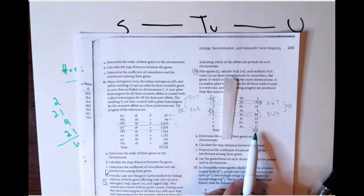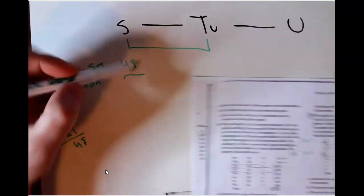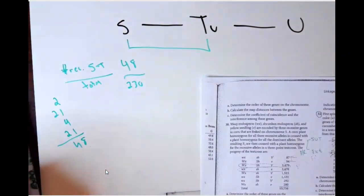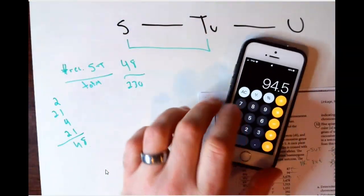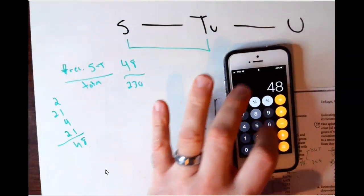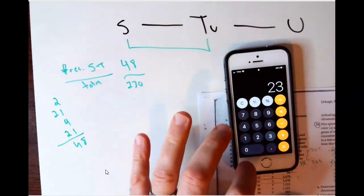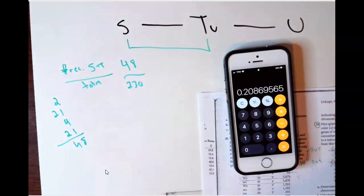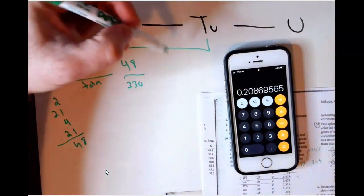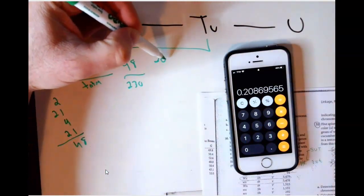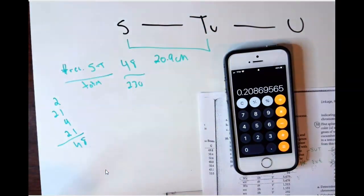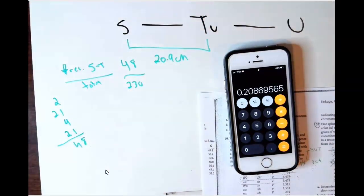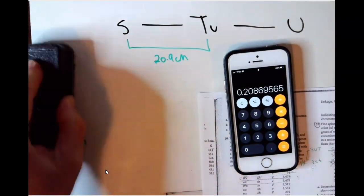The total number of progeny given is 230. So the percent recombination is 48 divided by 230 multiplied by 100, which rounds to 20.9 centimorgans or 20.9% recombination between s and t.